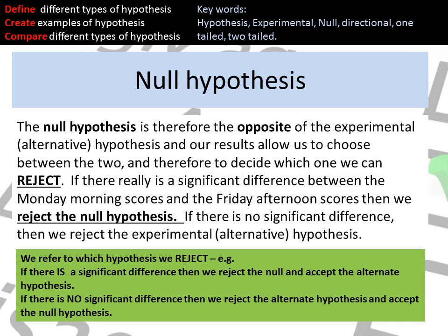The null hypothesis is the exact opposite — remember, null means no. The null hypothesis suggests that there will be no difference; the IV will have no effect on the DV at all. When there is a difference, we reject the null and accept the alternate hypothesis. If there is no significant difference, we reject the alternate hypothesis and accept the null hypothesis.